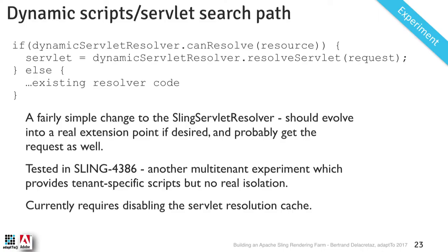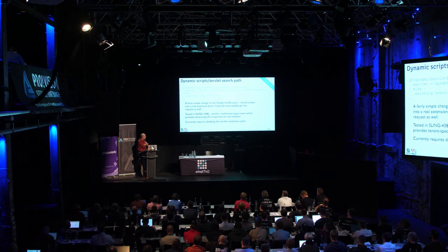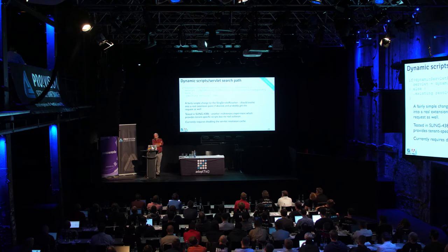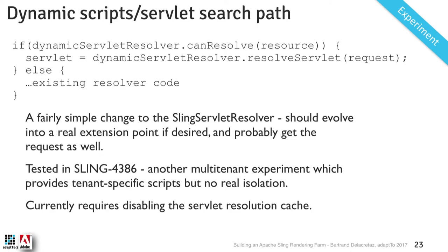The third experiment was about the dynamic scripts servlet search path — something I experimented with about two years ago. Sling-4386 is the JIRA ticket. With a relatively simple modification to the Sling script servlet resolver, you can introduce multiple servlet resolvers using the typical extension point mechanism: if a custom one gives me a result, I ignore the standard one. This would be useful for taking scripts from a tenant-specific folder — instead of slash apps, you take slash example.com slash apps because the current request was sent to example.com. It's not hard, but it has an impact on caching: in my prototype I had to disable the servlet scripts cache, so if we want to implement that, we'd have to improve the caching to be aware of it.